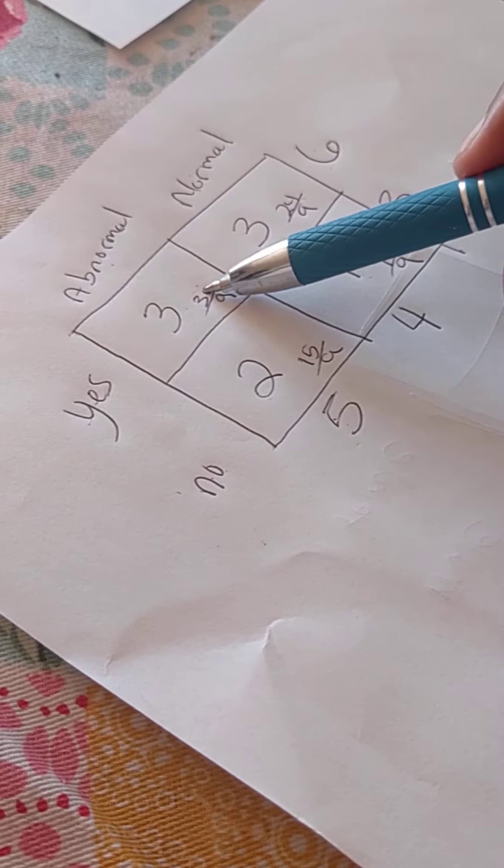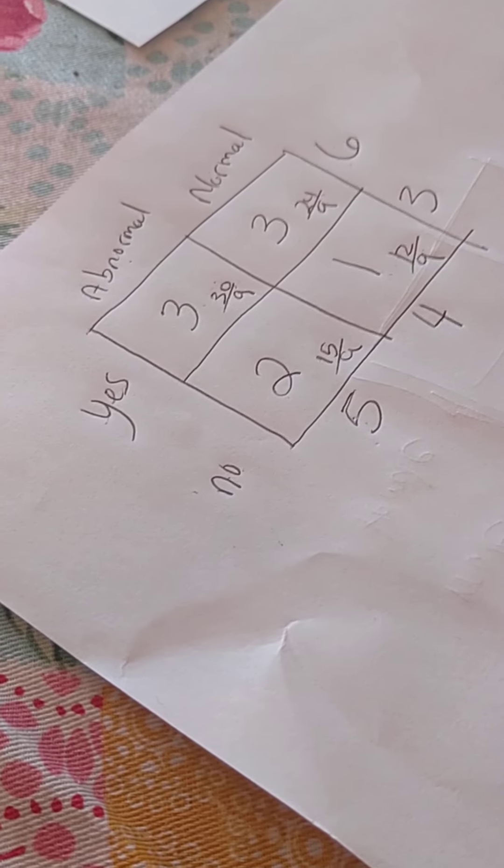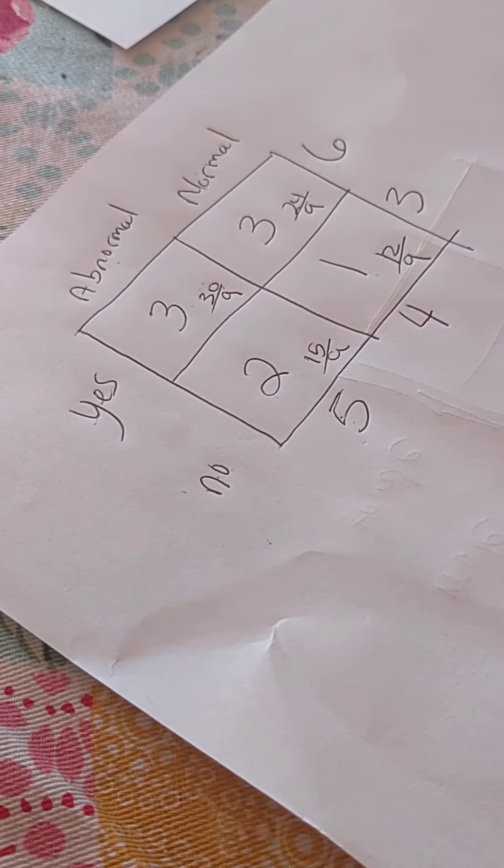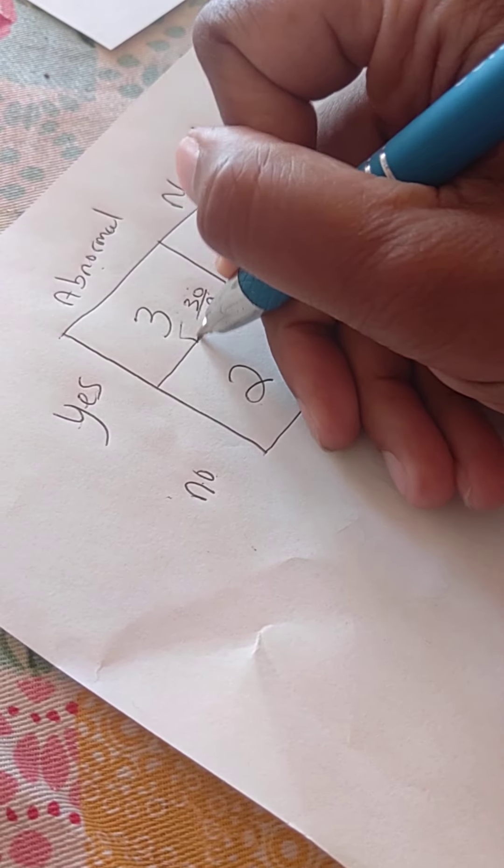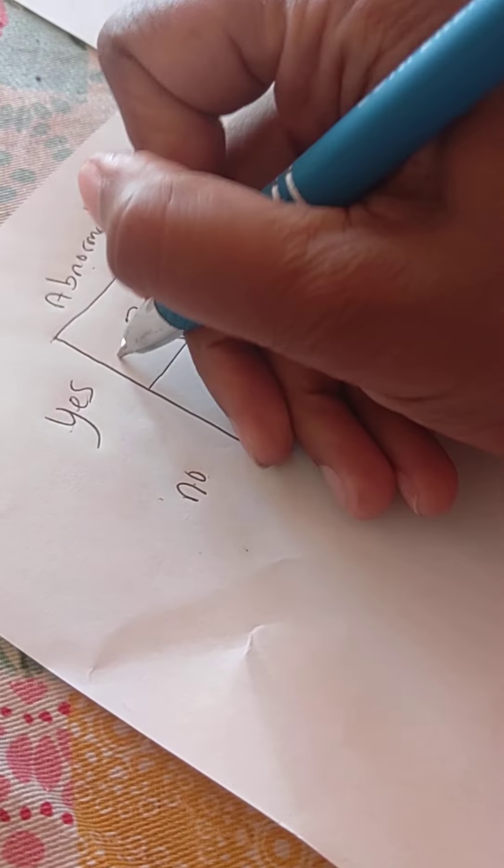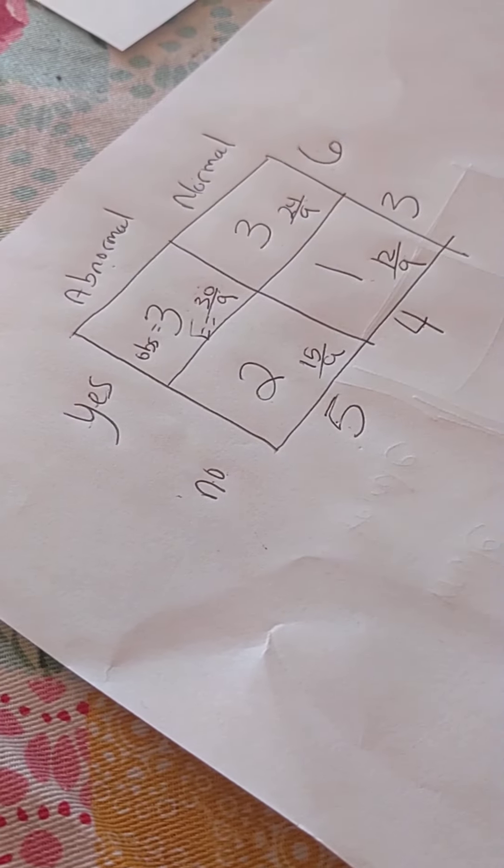And so, your chi-square test is just looking at the distance between your expected value. Let's put a little E in here so we know what we're doing. This is observed. Observed.